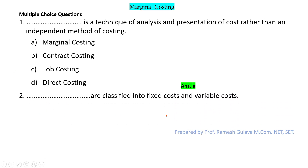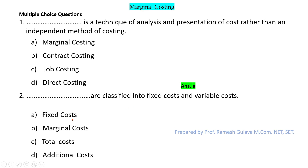The next question says: dash are classified into fixed cost and variable cost. Options are fixed cost, marginal cost, total cost, and additional cost. Logically, total costs are classified into fixed cost and variable cost, so option C — total cost — is the right answer.